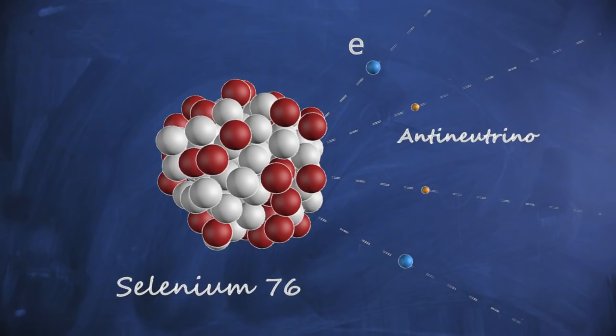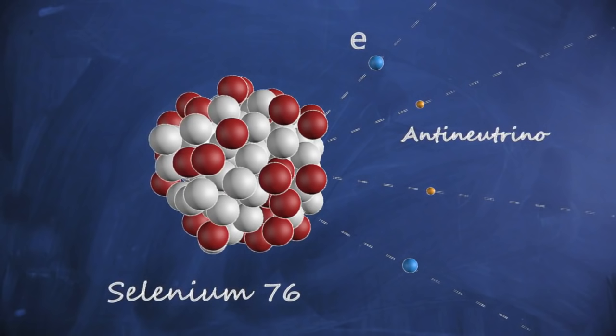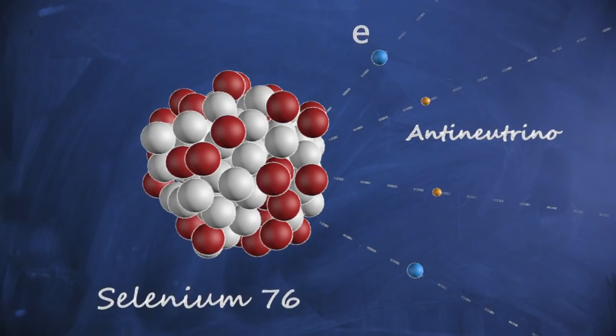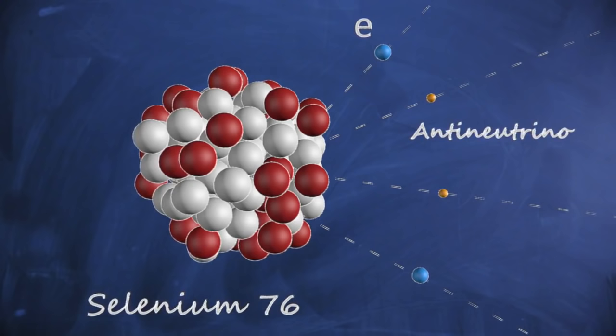Very few nuclei can undergo this decay, since it requires that the isotope 1 beta decay from the original be more unstable, making this simpler decay even more unlikely. The nuclei for which this decay has been observed are extremely stable with lifetimes greater than the age of the universe.